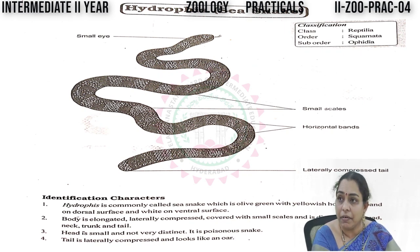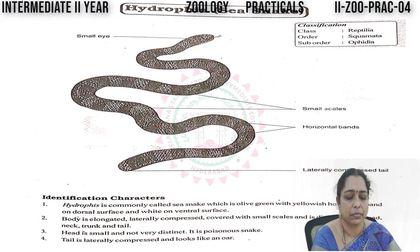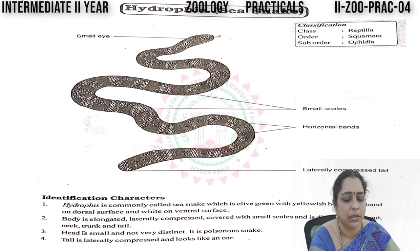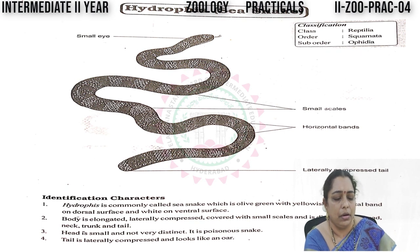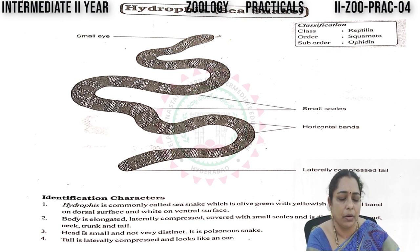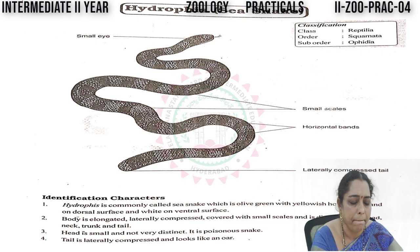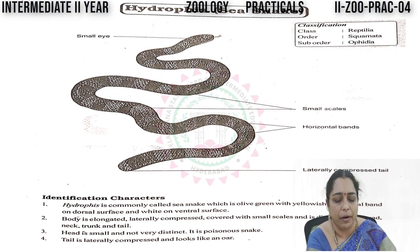Let us see the continuation of our topic. The next specimen is Hydrophis, commonly known as the sea snake. Let us look at the classification: Phylum Chordata, Class Reptilia, Order Squamata, Suborder Ophidia.